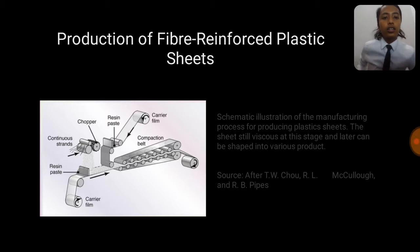This is additional knowledge of the production of fiber reinforced plastic sheets. The diagram shows the schematic illustration of the manufacturing process for producing plastic sheets. The sheets are still viscous at this stage and later can be shaped into various products.